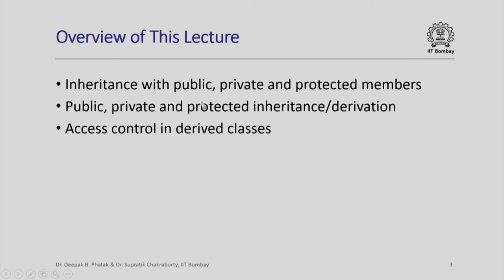In the examples so far, all data members were public and the inheritance was also public. In this lecture we are going to see inheritance with data members that have access control defined by public, private, or protected keywords. This 'protected' is a new keyword we are encountering now. We will also see what inheritance in public, private, and protected mode means, and together these two things determine how you control access of data members and member functions in derived classes.